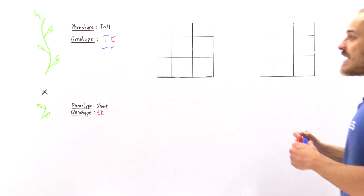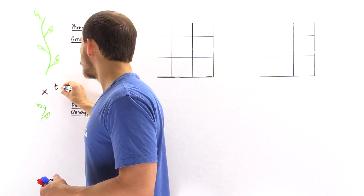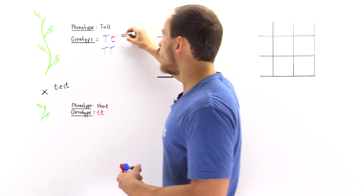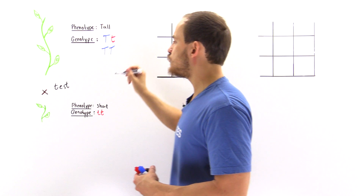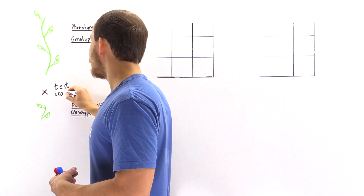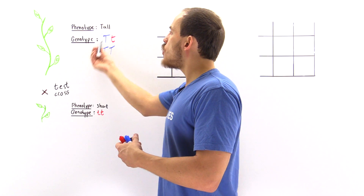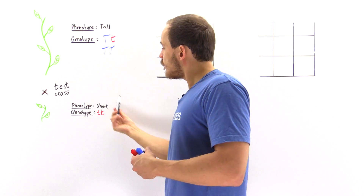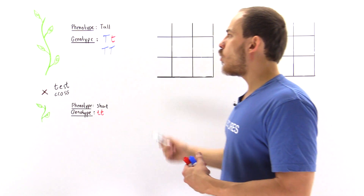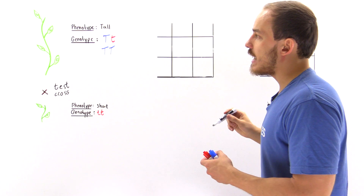This is what we call a test cross. A test cross is the experiment that allows us to determine which one of these genotypes the plant actually is. By crossing our unknown genotype with the known genotype, we can determine what that initial genotype is.